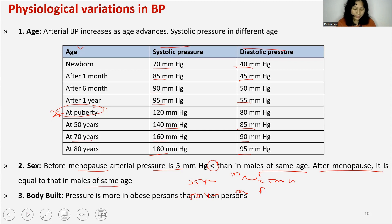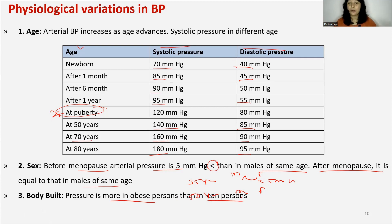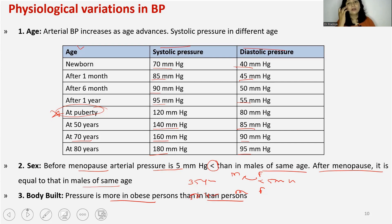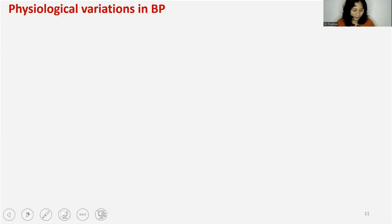Third is body build. BP is more in obese persons than in lean patients. In an obese patient, more metabolic activity means more energy demand, more oxygen demand, and therefore more cardiac output, which results in higher BP. In a lean patient, less oxygen demand means less cardiac output and lower BP. That is why in borderline hypertension we advise the patient to reduce weight, since it is directly proportional to weight gain.